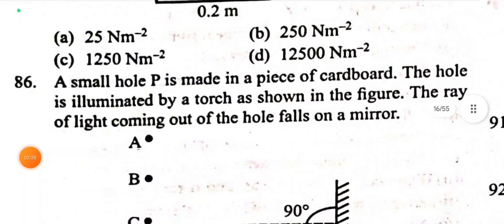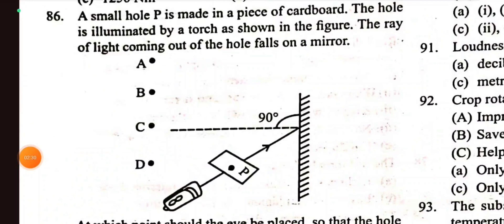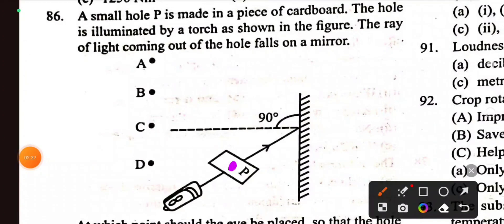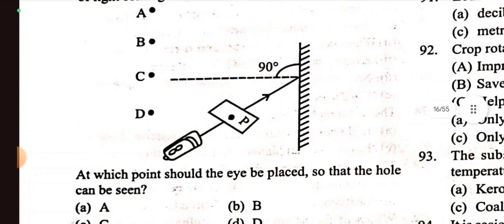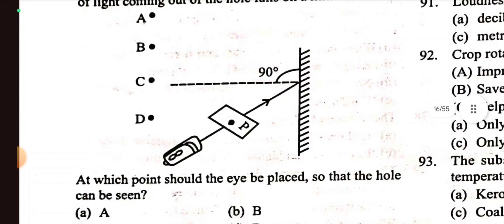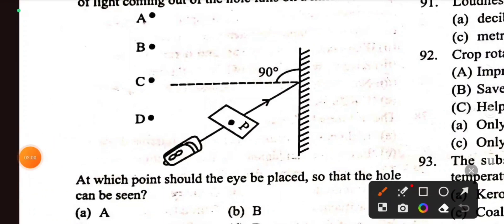Question 86: A small hole P is made in a piece of cardboard. The hole is illuminated by a torch as shown in the figure. The ray of light coming out of the hole falls on the mirror. At which point should the eye be placed so that the hole can be seen?